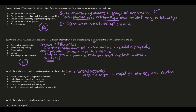Fungi are not prokaryotes, so we can eliminate B and E. Ability to photosynthesize describes plants, so we eliminate A. We're left with C and D. Not all fungi are unicellular, and fungi do have cell walls — so C is incorrect. What we're left with is D: absorptive, possess cell wall, eukaryotic. The answer is D.